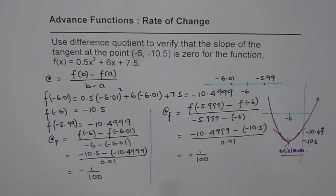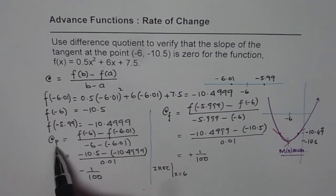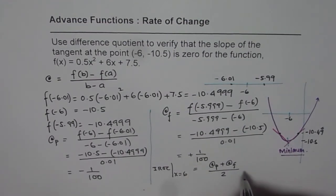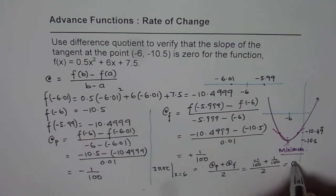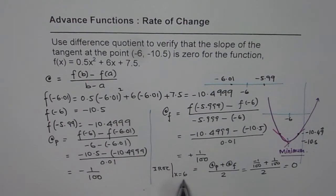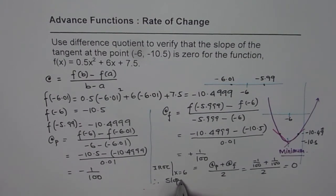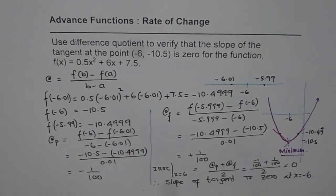The instantaneous rate of change at x = -6 is the average of the preceding and following rates: (-1/100 + 1/100) / 2 = 0. Since the instantaneous rate of change is 0, we have a tangent at this point with slope 0 — a horizontal tangent. With the difference quotient method, we have verified that the slope of the tangent at x = -6 is indeed 0.